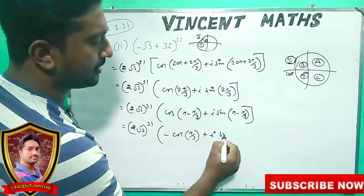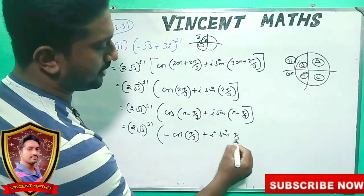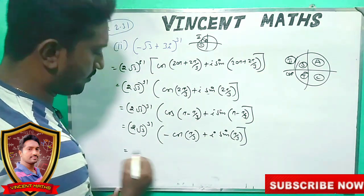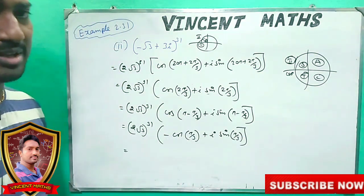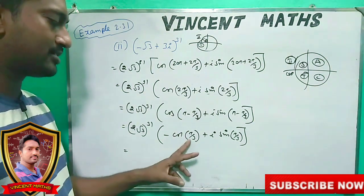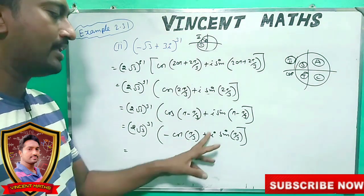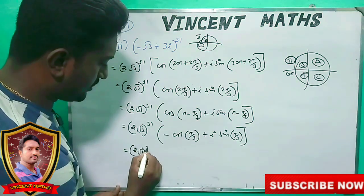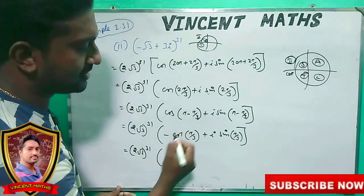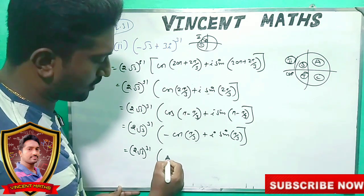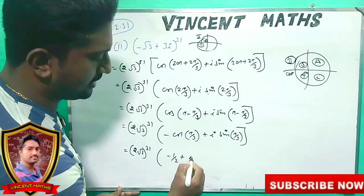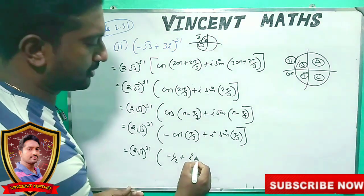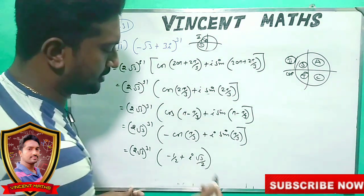i sin pi by 3. Now pi by 3 is your value — pi by 3 is 60 degrees. Cos 60 degree value is 1 by 2, so minus 1 by 2. Plus i, and sin 60 degree value is root 3 by 2.